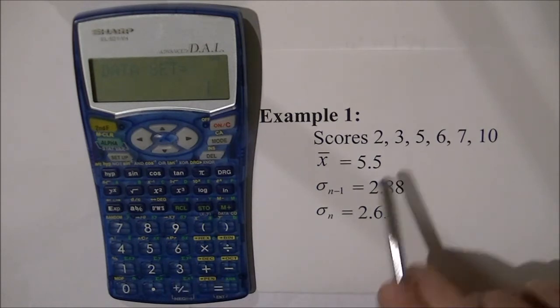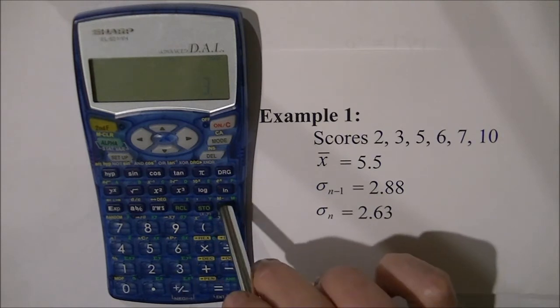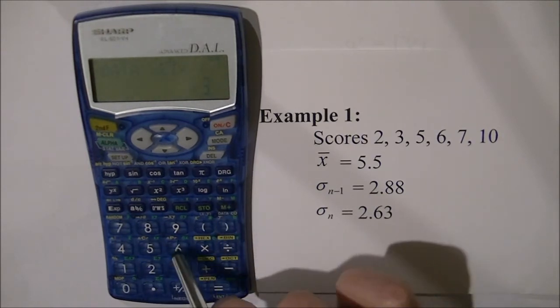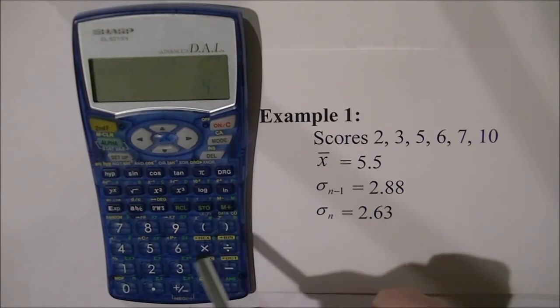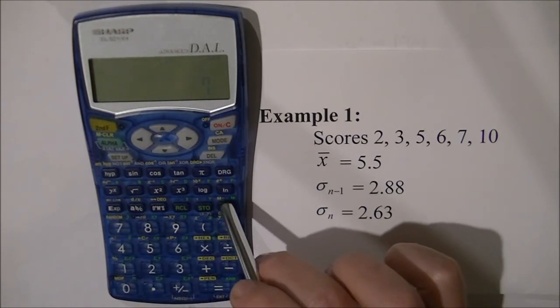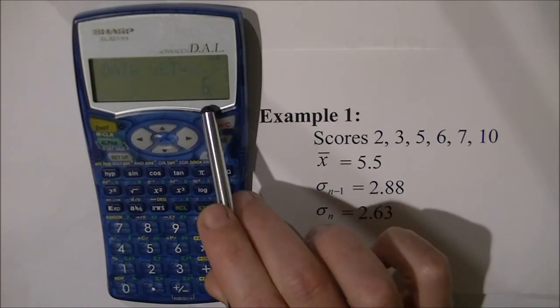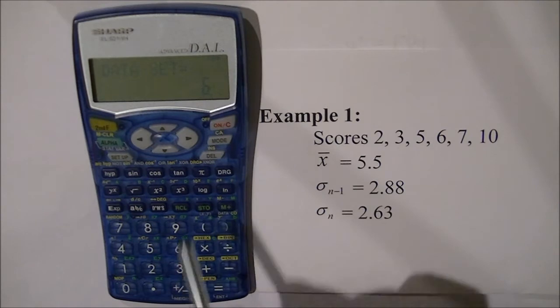So we'll put in the other scores 3, M plus data set equals 2, 5 M plus, 6 M plus, 7 M plus, 10 M plus. We've entered six scores it tells us we've got six scores in there and we're ready to calculate with them.